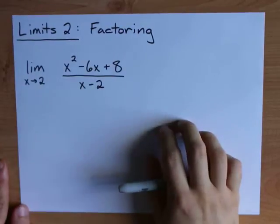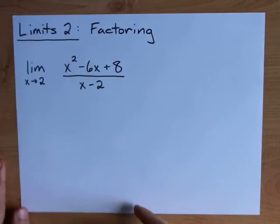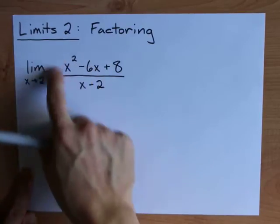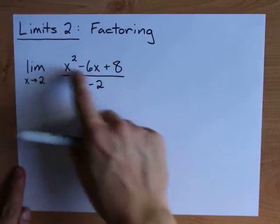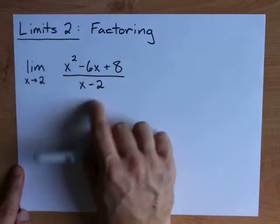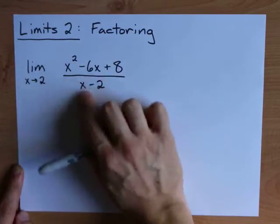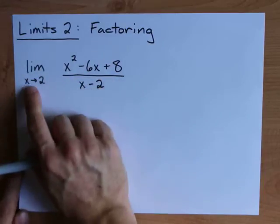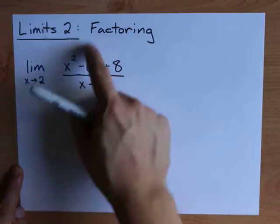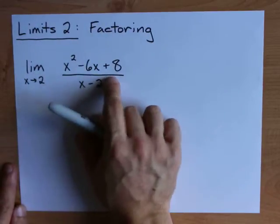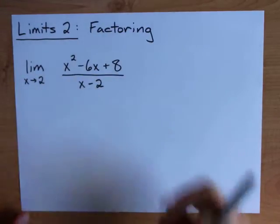One of the other easy ways to handle limit questions is by factoring. If you plug 2 into this expression, you'll end up with something on top and 0 on bottom. I don't care what's on top. You can't divide by 0, so you can't just plug 2 in and expect to get a number out. But because the top is quadratic, I recommend you factor.